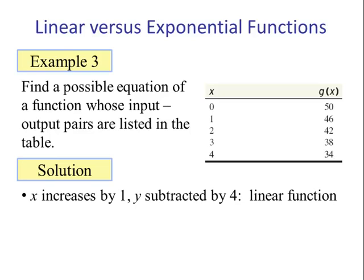The slope would be negative 4 over 1. As x increases by 1, y decreases by 4. The y-intercept b is 50. Putting it into our linear function y = mx + b, we have y = -4x + 50.